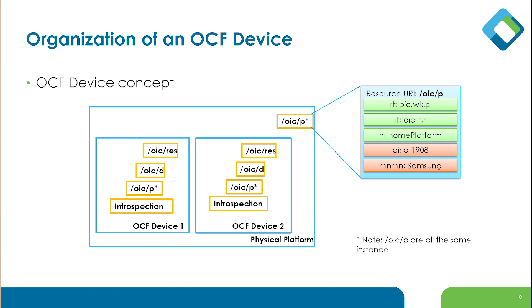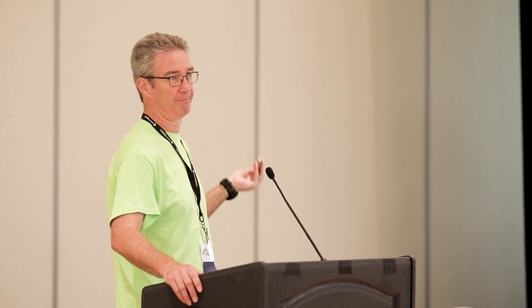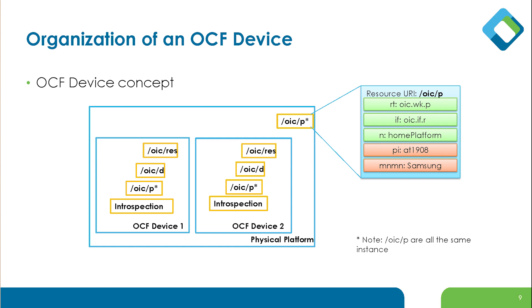Just how the device is laid out: there's a sense of resources you have to have — that every device always has — and resources that you may have. All devices have what we call a platform resource (oic/p), which is basically 'what am I living on?' There could be more than one device on a platform — think of a phone: it's a camera, a video player, and whatever else. All devices also have a device resource (oic/d), which tells you what you are — a light, a switch, a TV, a refrigerator.